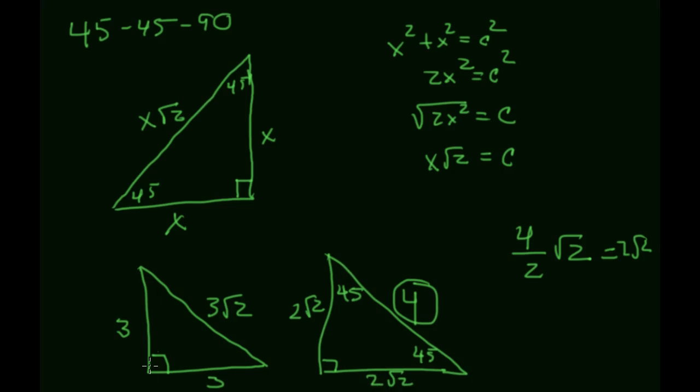So you have two situations here. One is you're given the two congruent sides. If you know that, then you just put a radical 2 on it. The second situation is this guy, where I'm given the hypotenuse. And in that case, I divide by 2 and put a radical 2 on it.